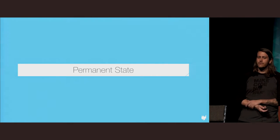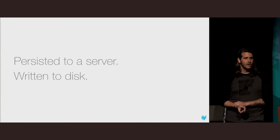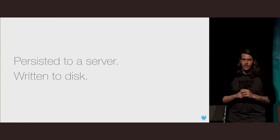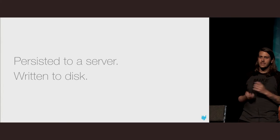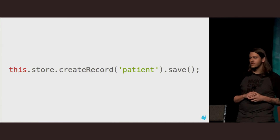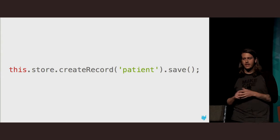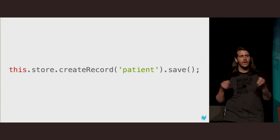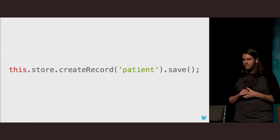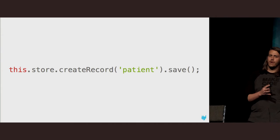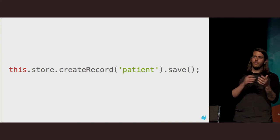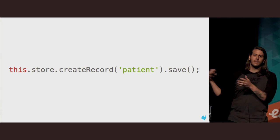Permanent state is state we can generally think of as living on a server somewhere. Ephemeral state lives in your browser; permanent state lives on your server. One important characteristic of permanent state is that it's written to disk. Here's an example showcasing both ephemeral and permanent state. When we call this.store.createRecord — in our case, a patient record — that creates ephemeral state in the browser in memory in Ember's DS store. When we call save on that record, it transforms our ephemeral state into permanent state on the server.